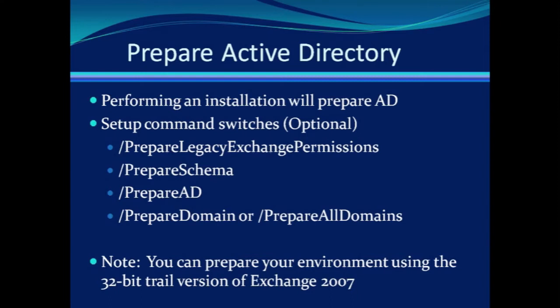Prepare legacy exchange permissions. You run this switch in the root domain of the forest on the intended Exchange 2007 server. You run this command to ensure the recipient update service functions correctly, and that administrative permissions are functioning properly after you perform the update of the schema for Exchange 2007.